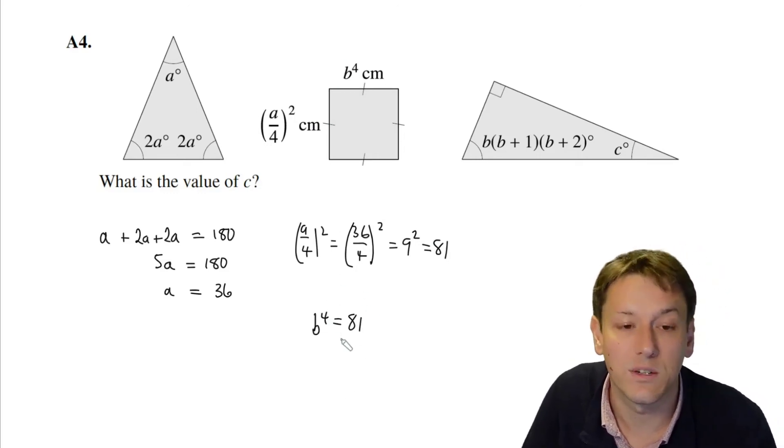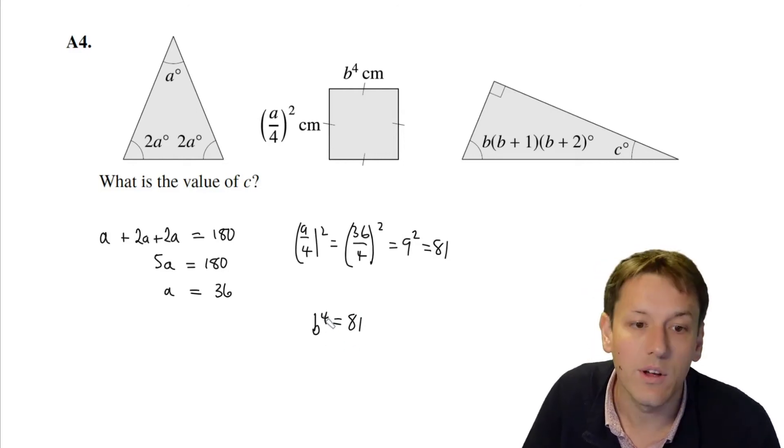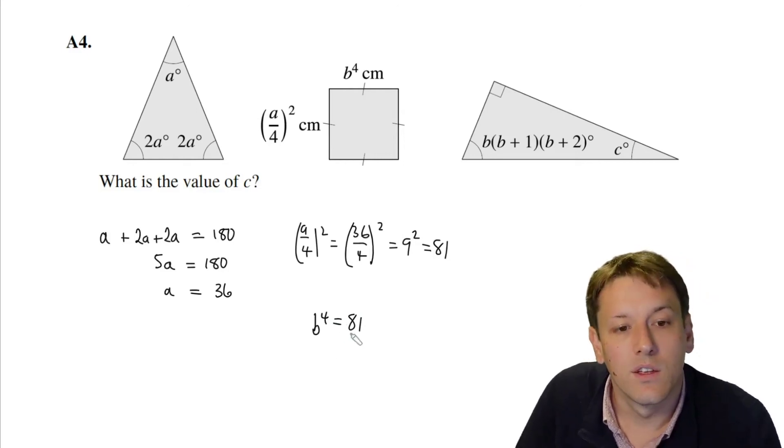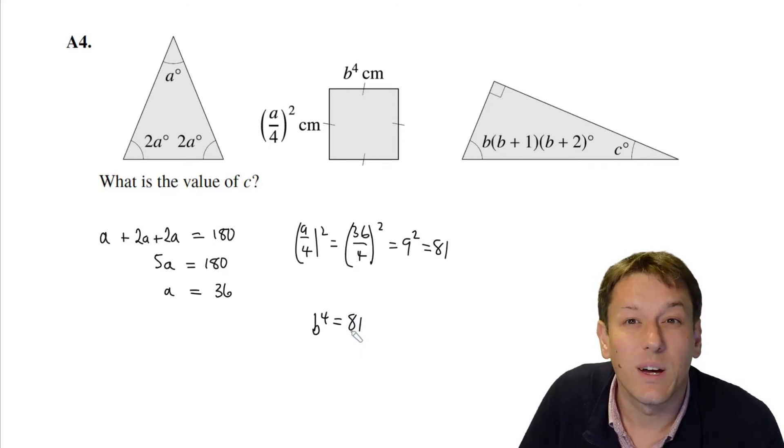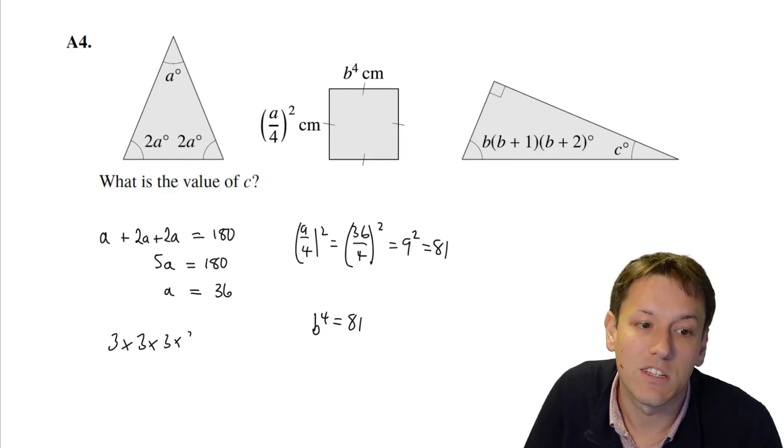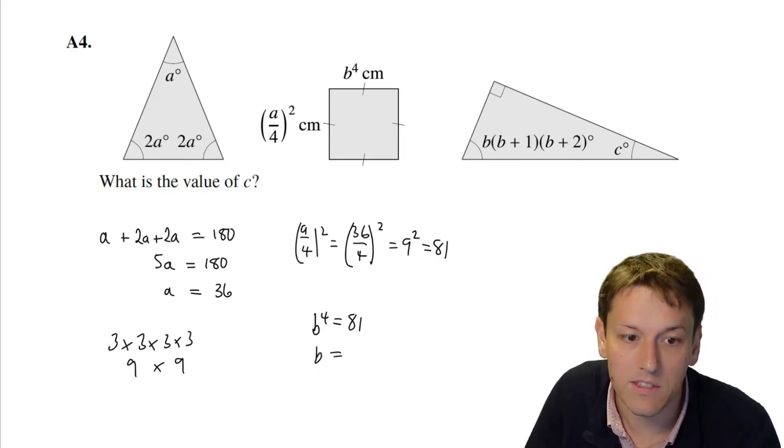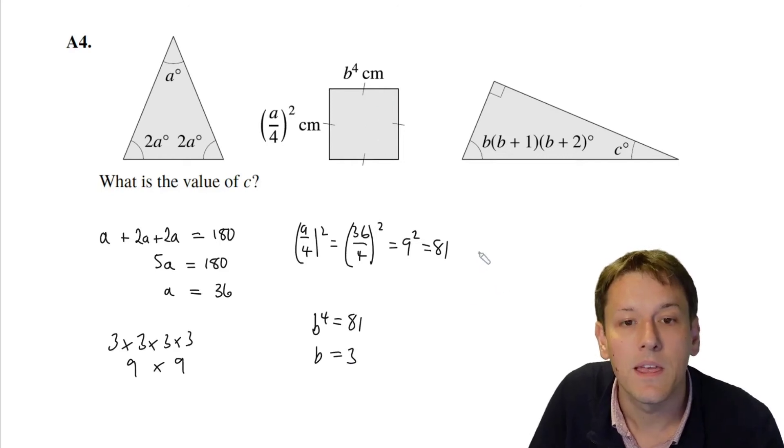Now b to the 4 is also the side length of the square, so b to the 4 is equal to 81. Now 81 is 9 squared, and so it's also 3 to the power of 4, because 3 times 3 times 3 times 3 is 81. So that means that b must be 3 centimeters.